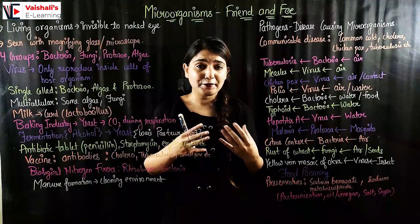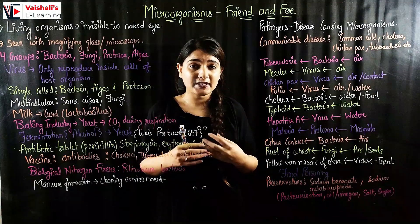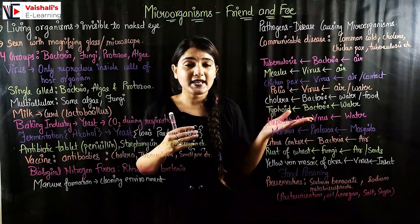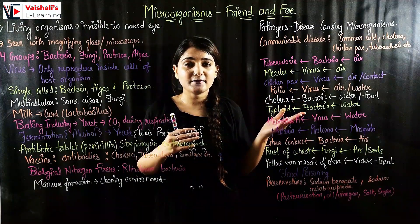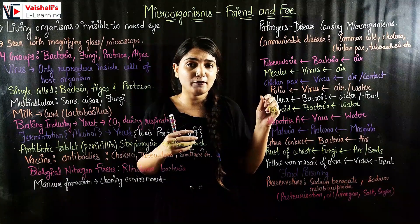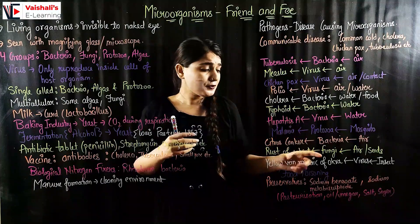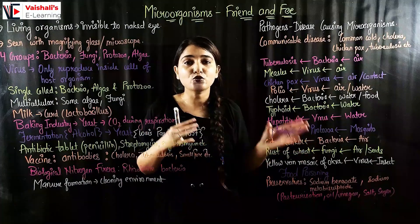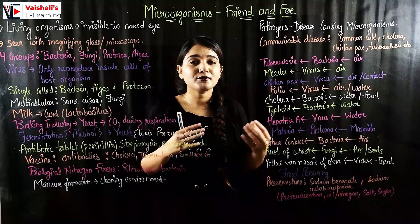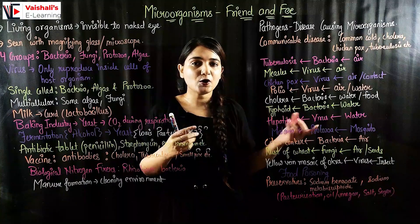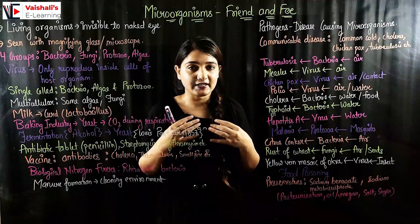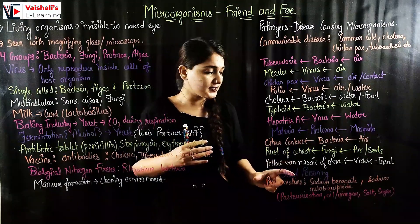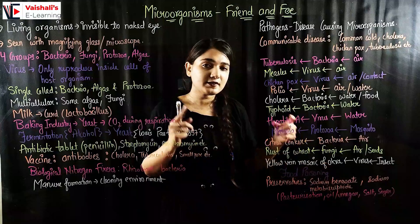Food poisoning occurs when microorganisms contaminate our food. For example, when bread is left for a long time, it gets contaminated by microorganisms and you can see yellow or brownish patches on it. If you eat that kind of contaminated food, you will get ill. So we need to preserve our food.